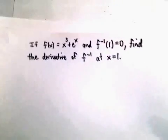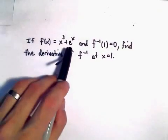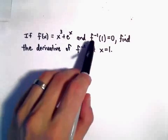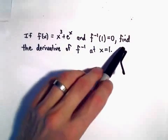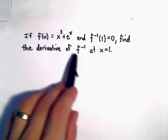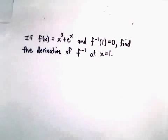So in this one we have a function x to the third plus e to the x, and we're given that f inverse of 1 equals 0. We want to find the derivative of the inverse function at x equals 1.